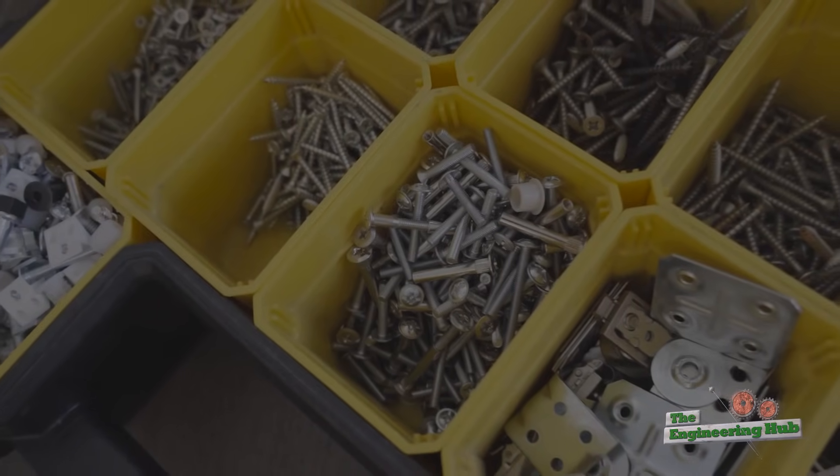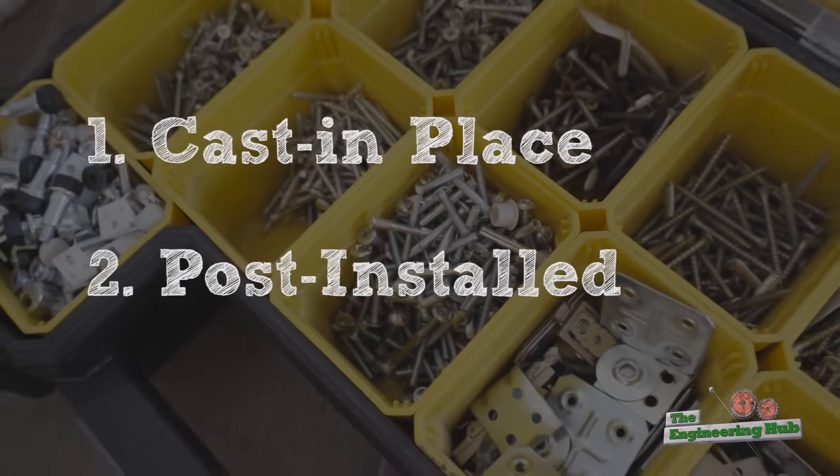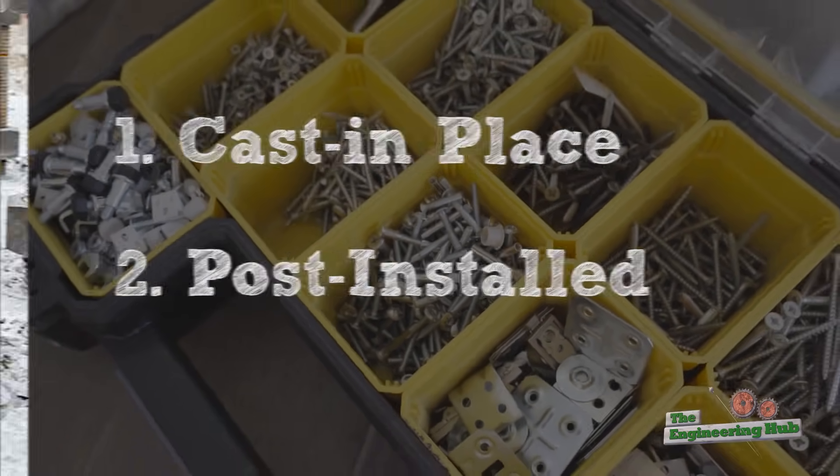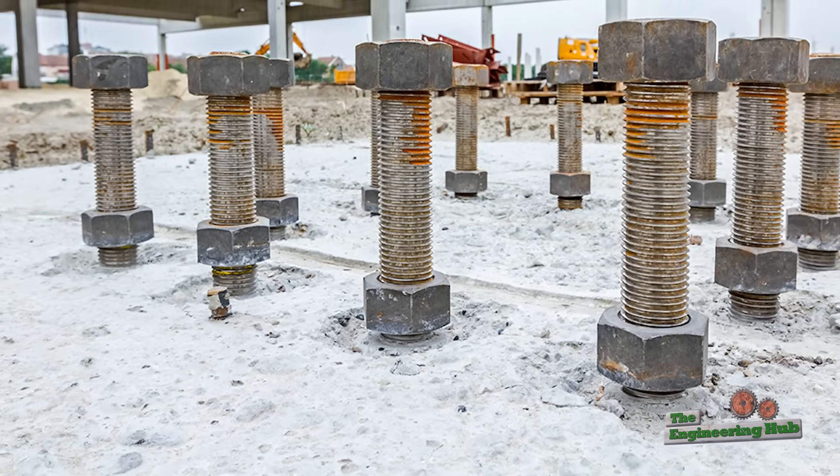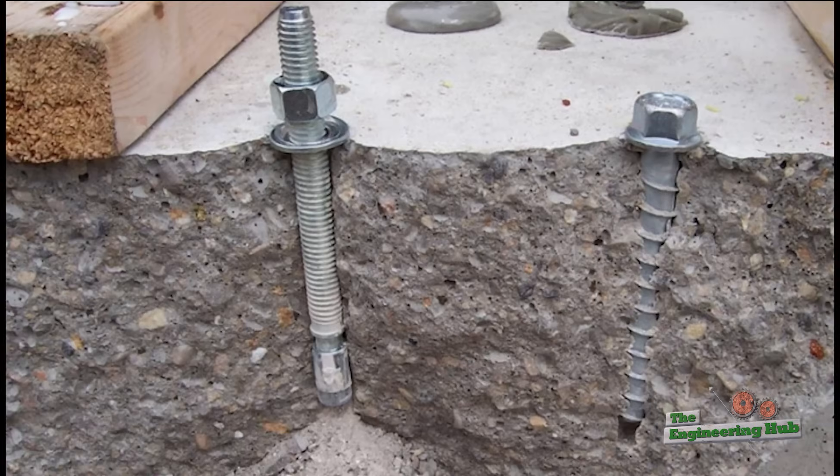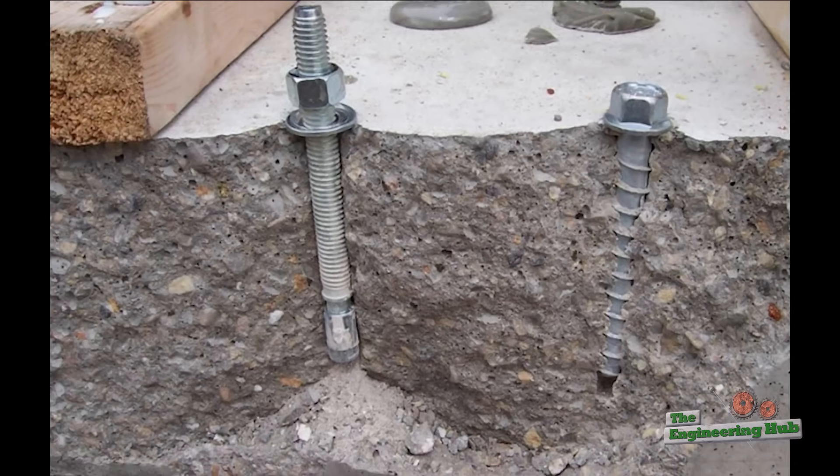Concrete anchors generally fall in two categories: cast-in or post-installed. Cast-in anchors are laid out and placed before the concrete is poured around them, and post-installed anchors are laid in and placed after the concrete has been poured.